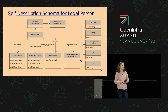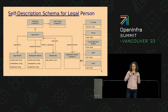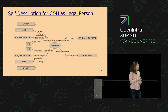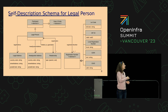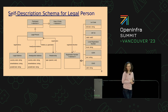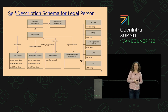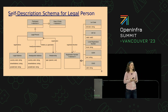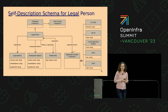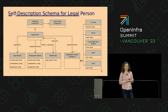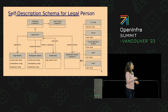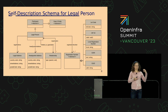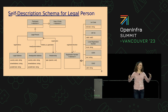Here you see the self-description schema for a legal person. A legal person is a special subclass of participant. What you can see is that we have three attribute groups which are mandatory: we have a legal address, we have a headquarter address, and we have a registration number. And the registration number is also subclassed by five different parts. Currently GaiaX supports the LEI code, the value-added tax ID, a local registration number, the Economic Organization Resource Identifier, and the European identifier. And there is an optional attribute — a relationship — so that you can model the parent and sub-organization relationship between legal persons.